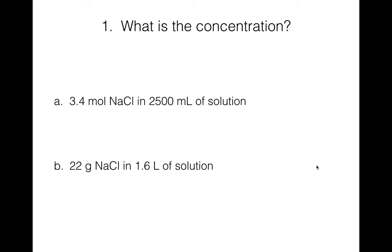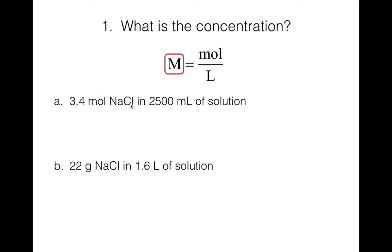The first type of problem is when you're asked to calculate the concentration. For every question, look at the formula for molarity: big M is equal to moles per liter. Figure out what you are calculating. For these first questions, we're trying to figure out the concentration — that's the big M. So we want to set up the problem by putting moles on top and liters on the bottom. For the first question, we are given 3.4 moles of NaCl in 2500 milliliters of solution. We want moles on top, liters on the bottom. We have moles, so we'll put 3.4 moles on top and 2500 milliliters on the bottom.